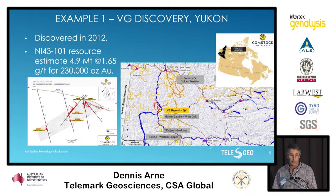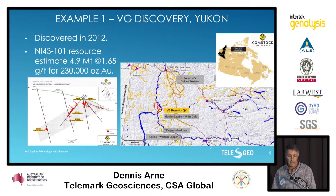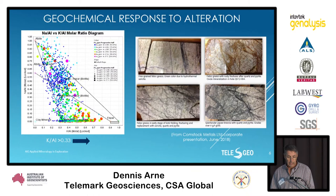Looking at the BG discovery in the Yukon first: this was discovered in 2012, has a small resource associated with it, and is in the area of the Golden Saddle deposit controlled by White Gold, and the Coffee deposit which is Goldcorp — you could put Newmont in there now. We're going to look at one of the discovery drill holes, drill hole number four.